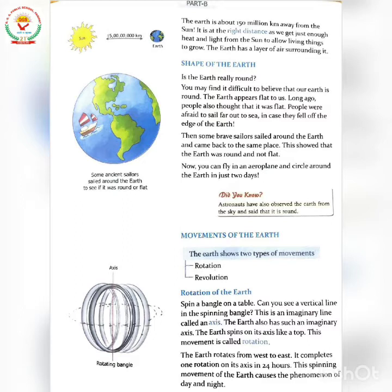The Earth rotates from west to east. It completes one rotation on its axis in 24 hours. Prithvi west se east ki taraf rotate karti hai aur apna ek rotation 24 hours mein complete karti hai. The spinning movement of the Earth causes the phenomenon of day and night — is spinning movement ki wajah se din aur raat hoti hai.